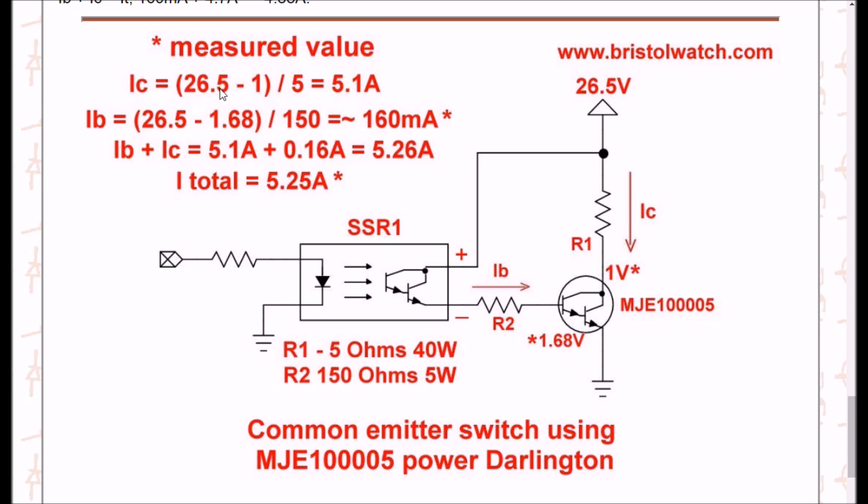Okay, 26.5. First, good news is the emitter-collector voltage drop of the transistor is 1 volt and not 3 volts. So 26.5 minus 1 divided by 5 is going to be around 5.1 amps.